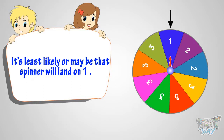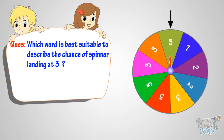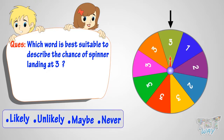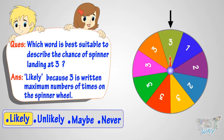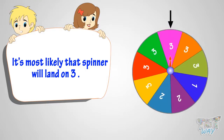Now, which word is best suitable to describe the chance of spinner landing at three? Likely, unlikely, maybe, or never? The answer is likely, because three is written the maximum number of times on the spinner wheel. So it's most likely that the spinner will land on three.